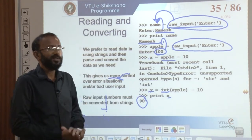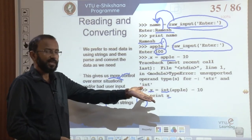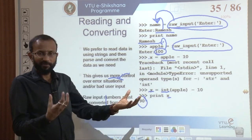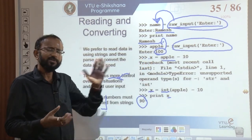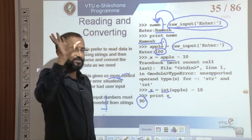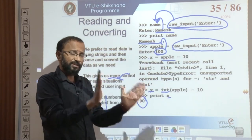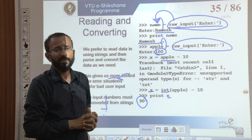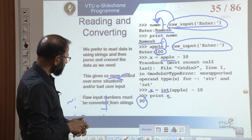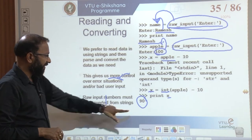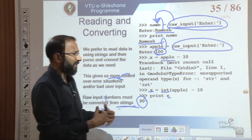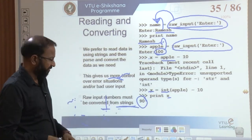So the key understanding is: raw_input data is always a string. If you want to do number manipulation, convert it using the int() function. There are many functions available for number conversion. Always remember: raw_input is always a string. Based on our requirement, we convert it into appropriate values or data types.